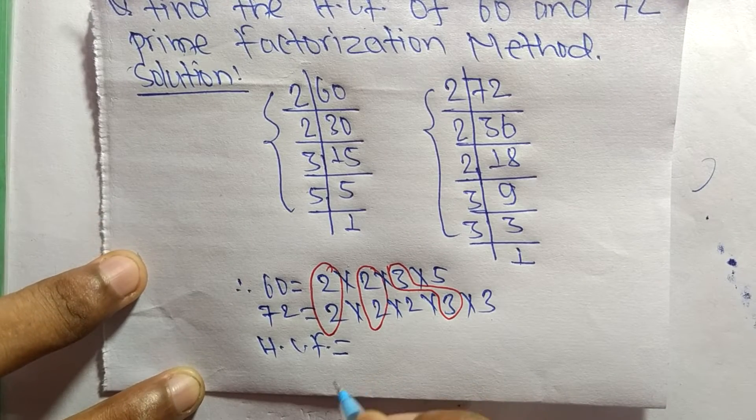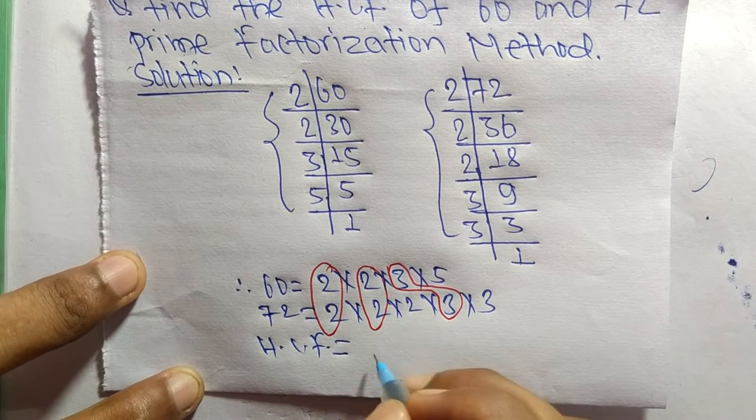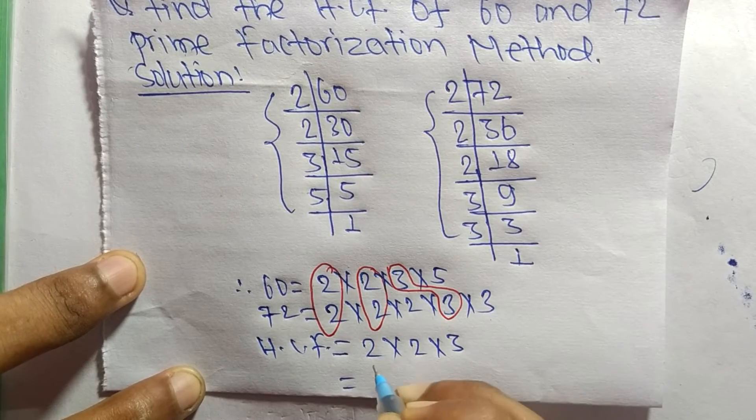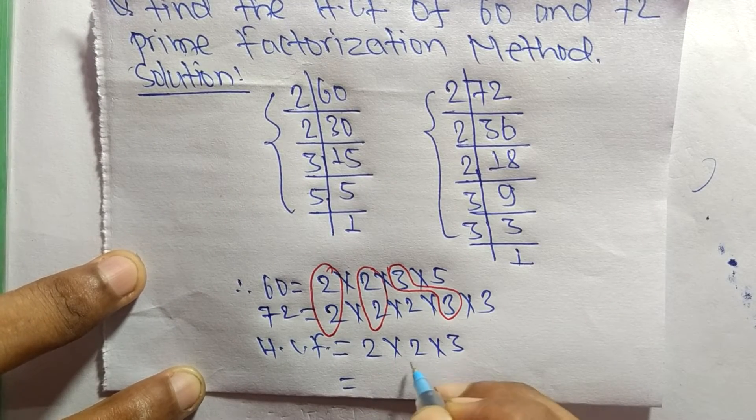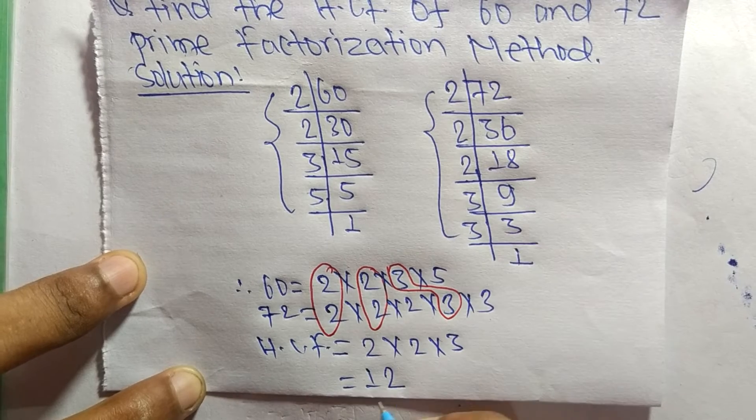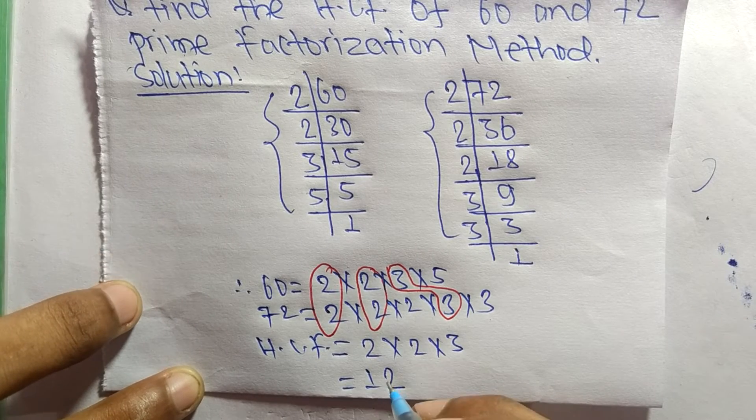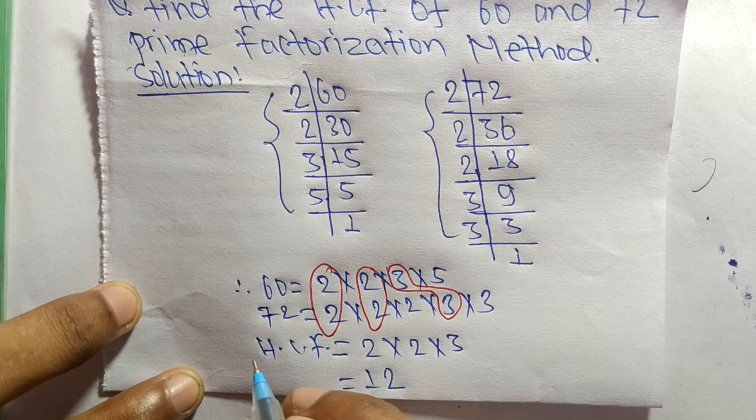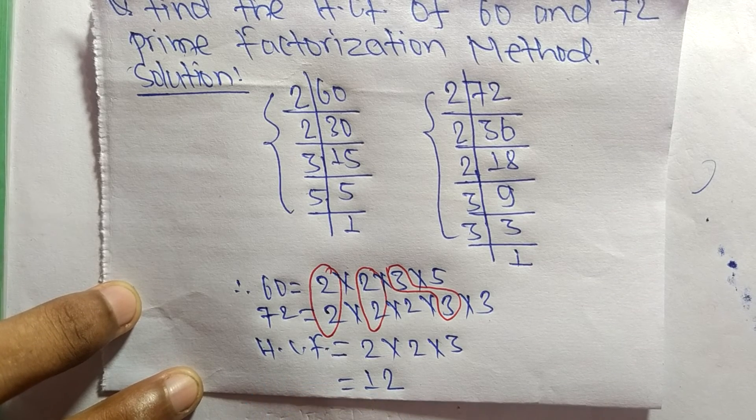So 2 times 2 equals 4, and 4 times 3 equals 12. So 12 is the HCF of 60 and 72. So this much for today and thanks for watching.